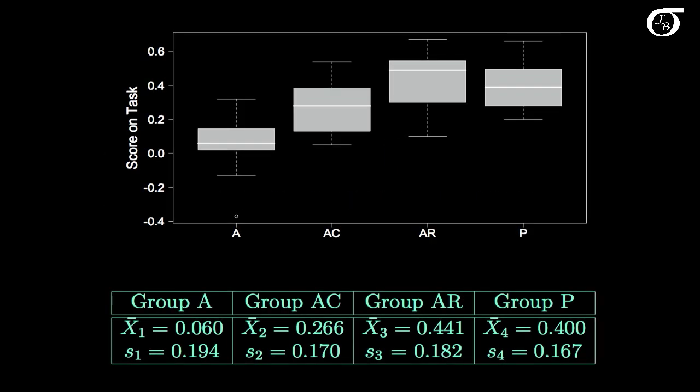Here we have the box plots and the summary statistics. Visually it appears as though there's differences between these groups. But what we want to do is test that statistically. Is there statistically significant evidence of a difference? The sample means for the four groups are listed down here. Also the sample standard deviations.